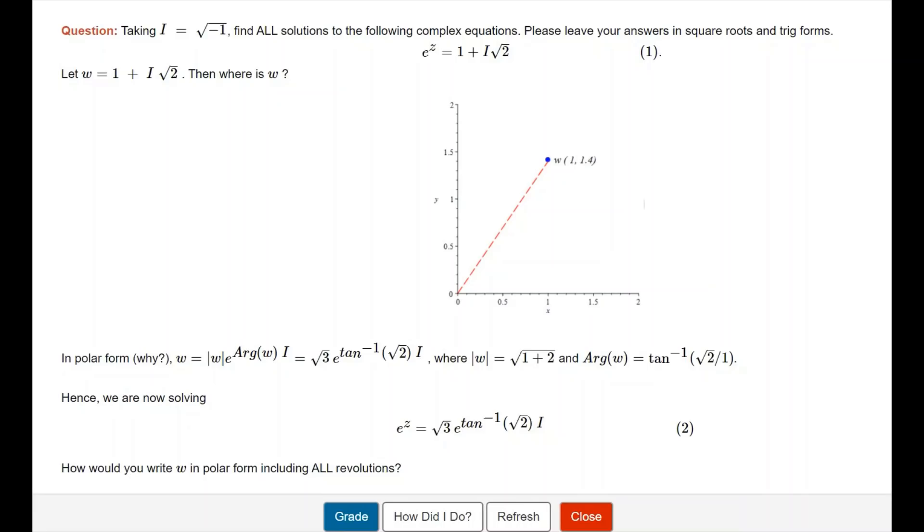In polar form, and why we need the polar form is important here. Think about it. W can be written as |w| × e^(i·arg(w)), which turns out to be √3 × e^(i·tan⁻¹(√2)). You can see how mod of w and arg of w have been explained. These things should be familiar to you.